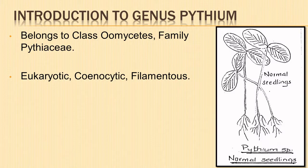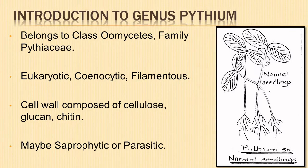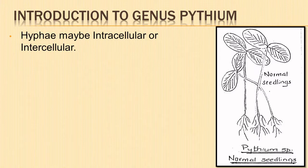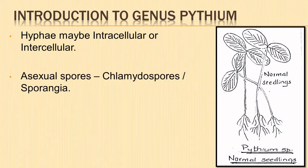Pythium species are eukaryotic, having true nuclei, coenocytic and filamentous. The cell wall of Pythium is composed of cellulose and glucans with a small amount of chitin. It may live saprophytically in moist humus soil or parasitically in the hypocotyl of seedlings of various land plants. The hyphae of Pythium may be intracellular or intercellular.